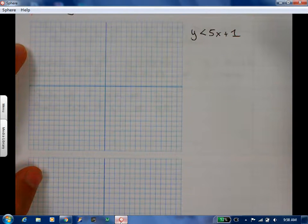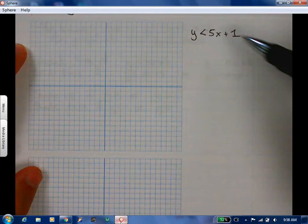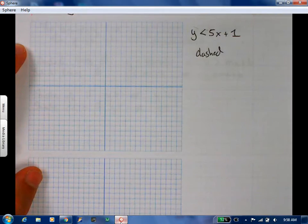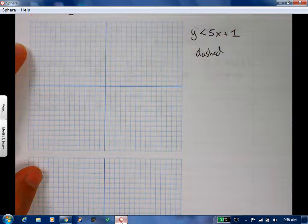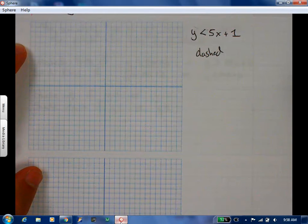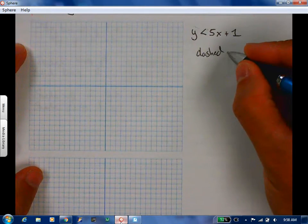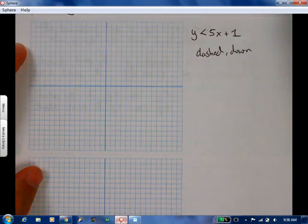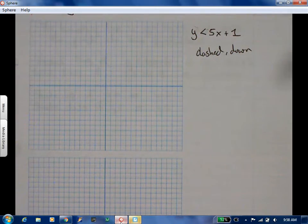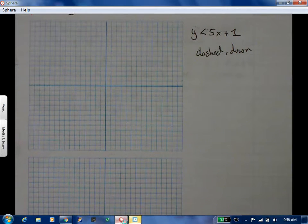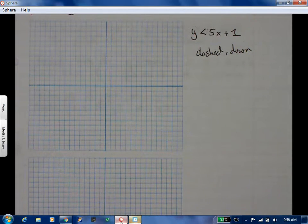Dashed. And when we're done, are we going to shade on top or below, shade up or shade down? Down. If y is less than, less than goes down. So between the five and the one, where do I start? Where does the graph start? Zero, one. Remember the plus one outside the function? It shifts the function one unit up. So that's my y intercept.